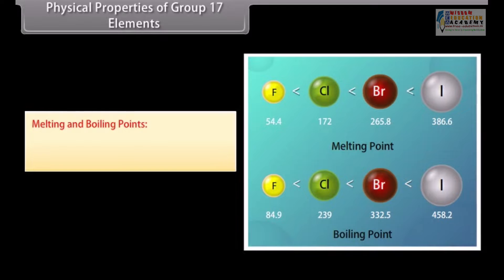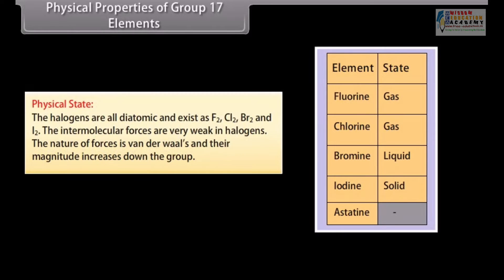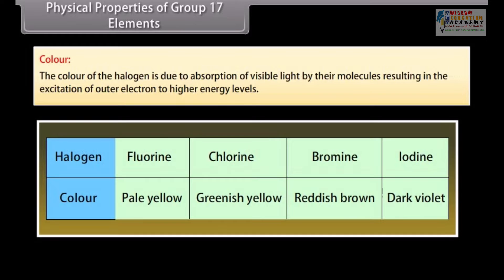Melting and boiling points increase with increase in atomic number, indicating that the strength of intermolecular forces of attraction between the molecules increases with atomic number. The halogens are all diatomic and exist as F₂, Cl₂, Br₂ and I₂. The intermolecular forces are Van der Waals and their magnitude increases down the group. Thus F₂ and Cl₂ are gases, bromine is a volatile liquid, and iodine is a volatile solid. The color of halogens is due to absorption of visible light, resulting in the excitation of outer electrons to higher energy levels; the color deepens down the group.